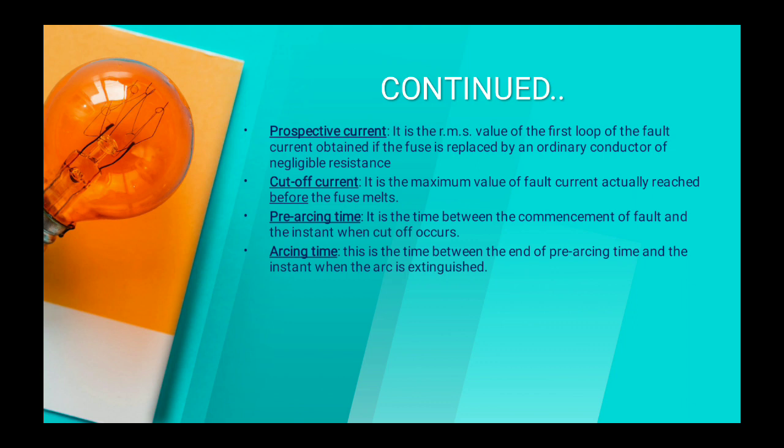The atoms of air, by the help of electric stress, are converted into ions and then current flows through the air. Since air is a high density medium, when current flows through the air there is enormous heat produced, and the heat energy is converted into electrical energy — this is known as arc. Arcing time is the time between the end of pre-arching time and the instant when the arc is extinguished — the time span during which the arc persists.